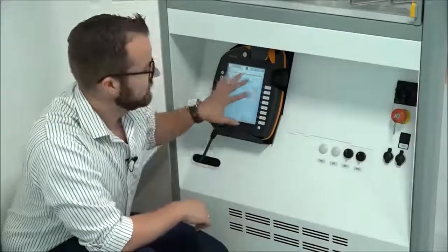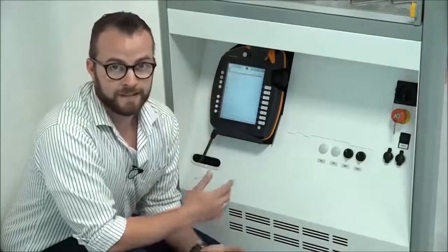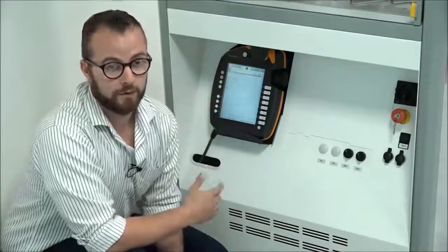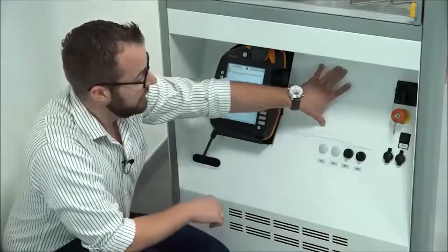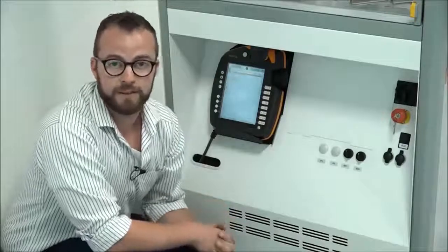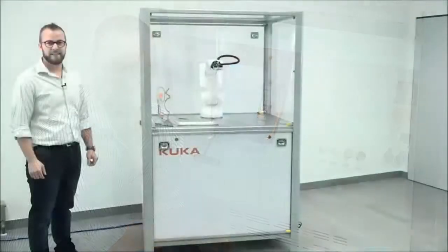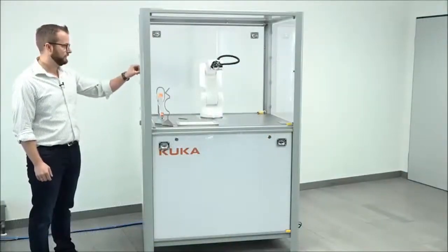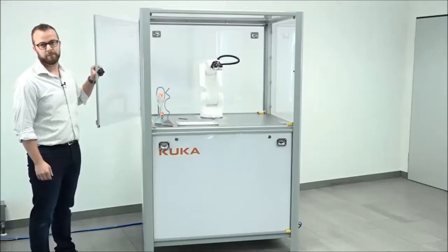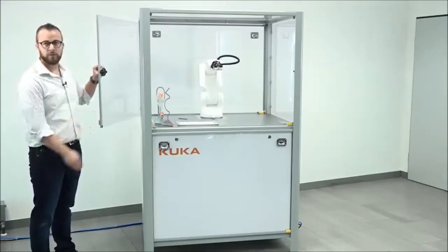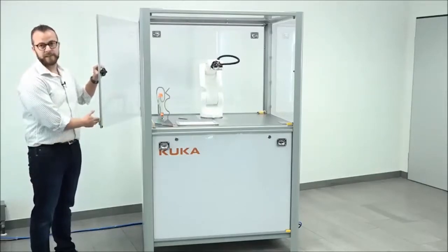Here's the Kuka SmartPad. Since this is the ready-to-educate Pro version, there is no touch panel integrated. This comes only with the ready-to-educate Advanced. The cell has four windows which may be opened so that students are able to come near to the point of interest. All four windows are monitored by safety sensors.